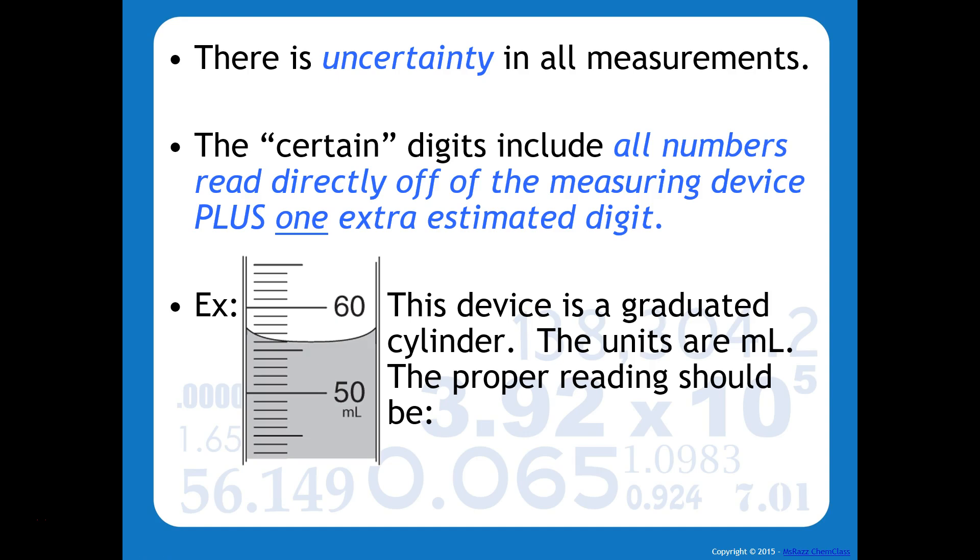But the question becomes, it could be 56.1, 0.2, 0.3, 0.4, you get the idea. But we should all agree that it's going to be 56. So that's why the proper reading should be something like 56 point something, because that point something is the estimated digit, and that will vary from person to person.